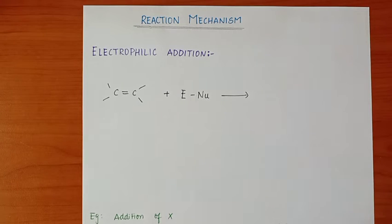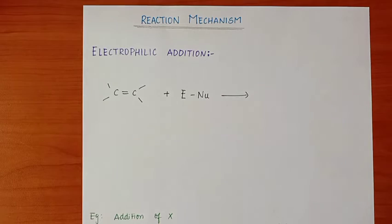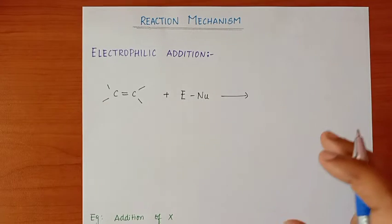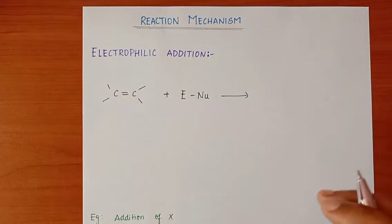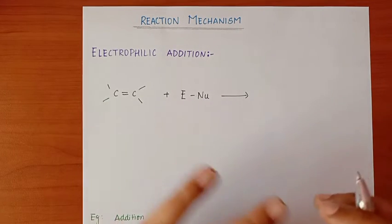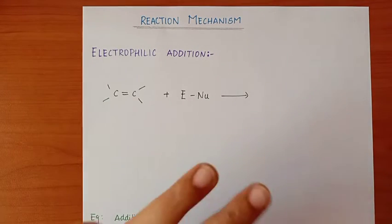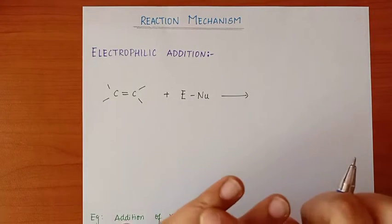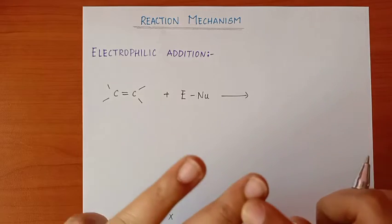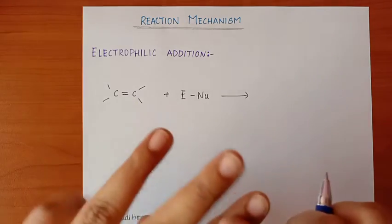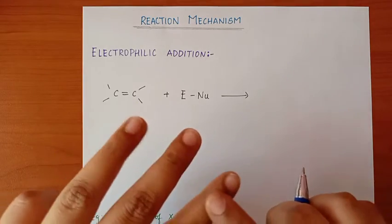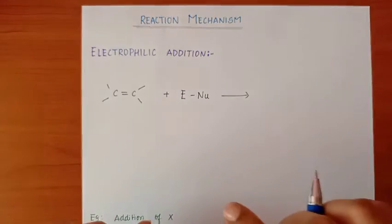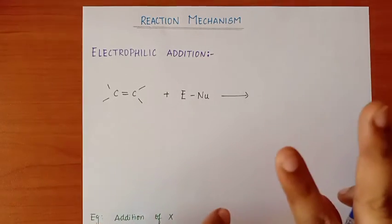In this video, the Electrophilic Addition Reaction mechanism is discussed. In this reaction mechanism, there are 3 types of reactions: the first is Addition Reaction, the second is Substitution Reaction, and the last is Elimination Reaction. Elimination Reaction has 2 types.